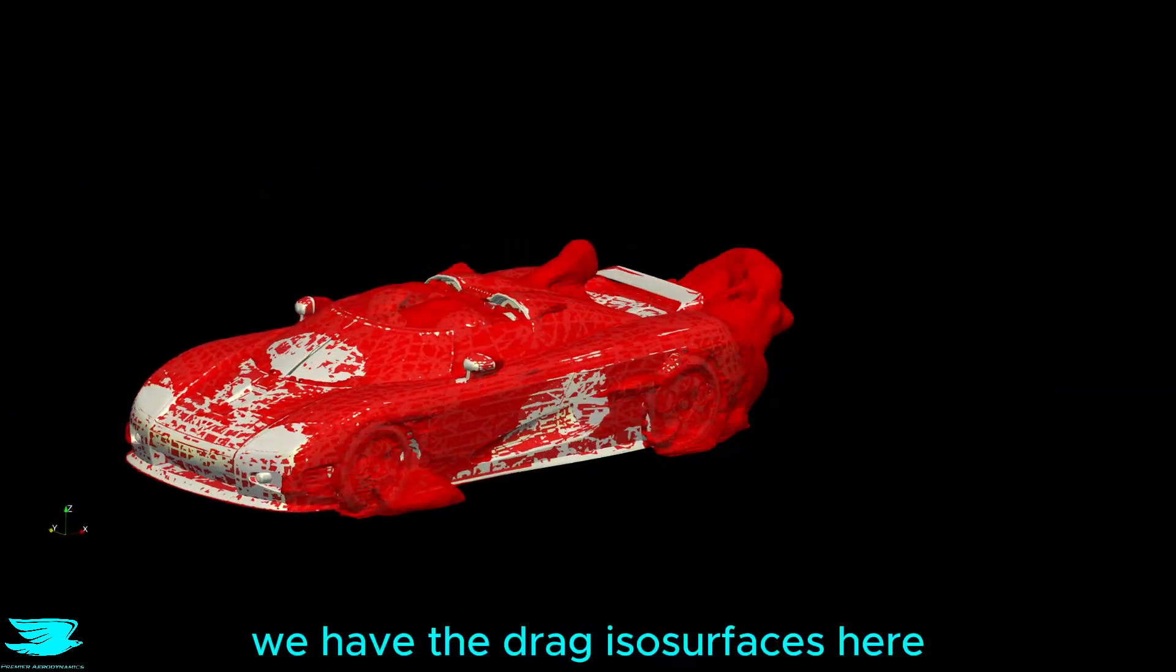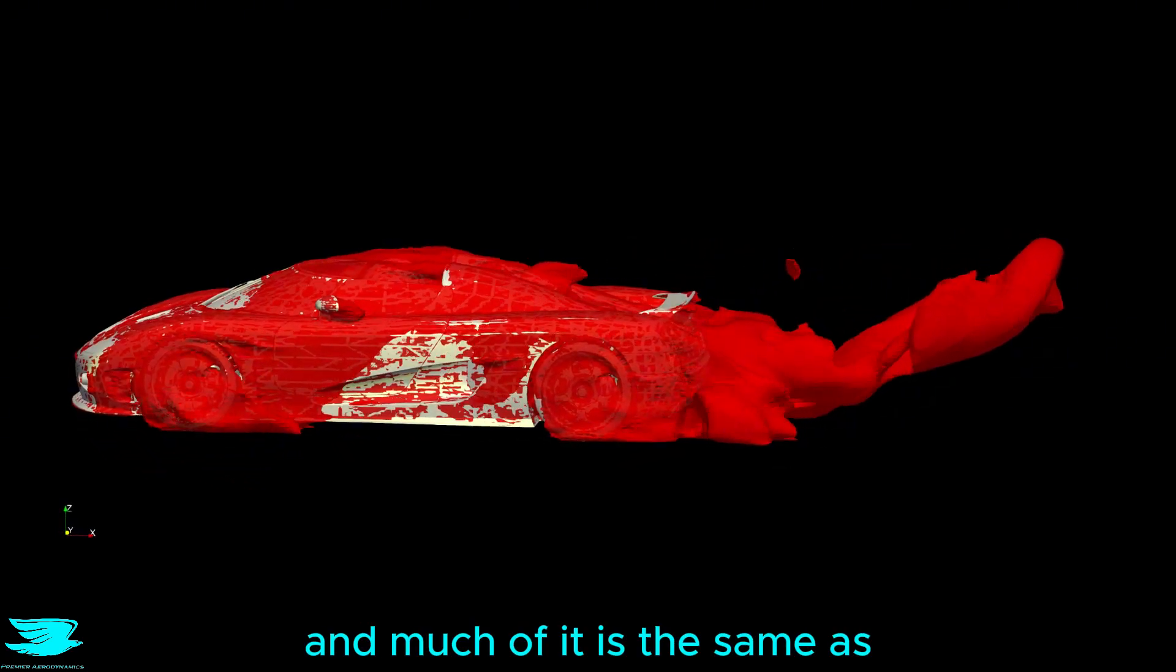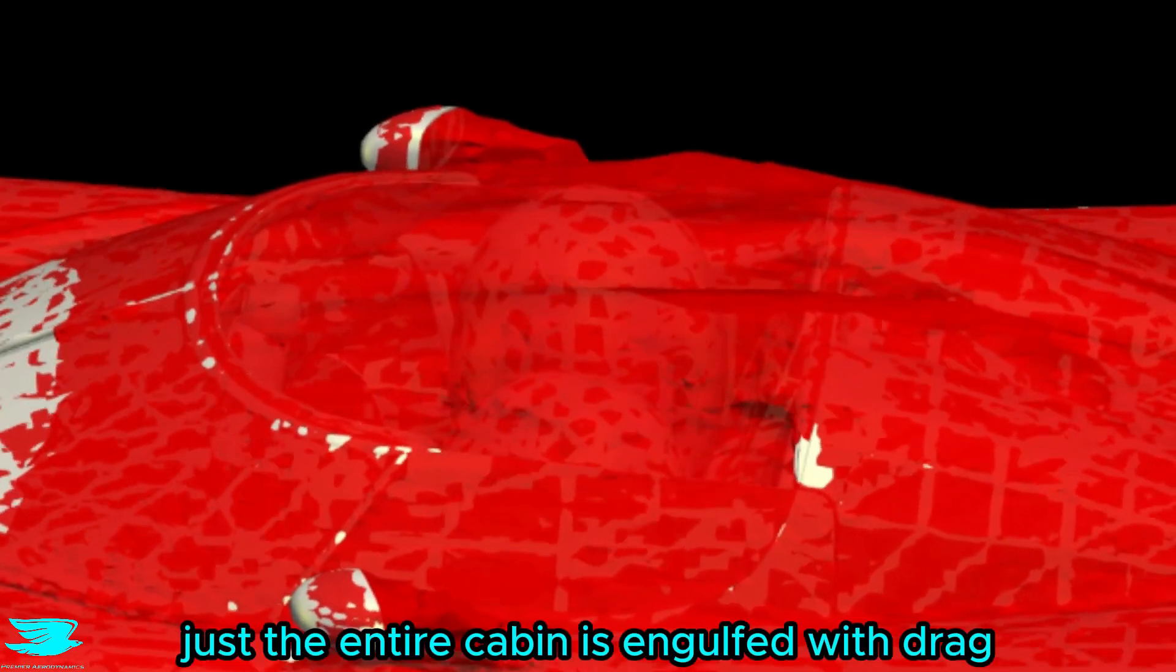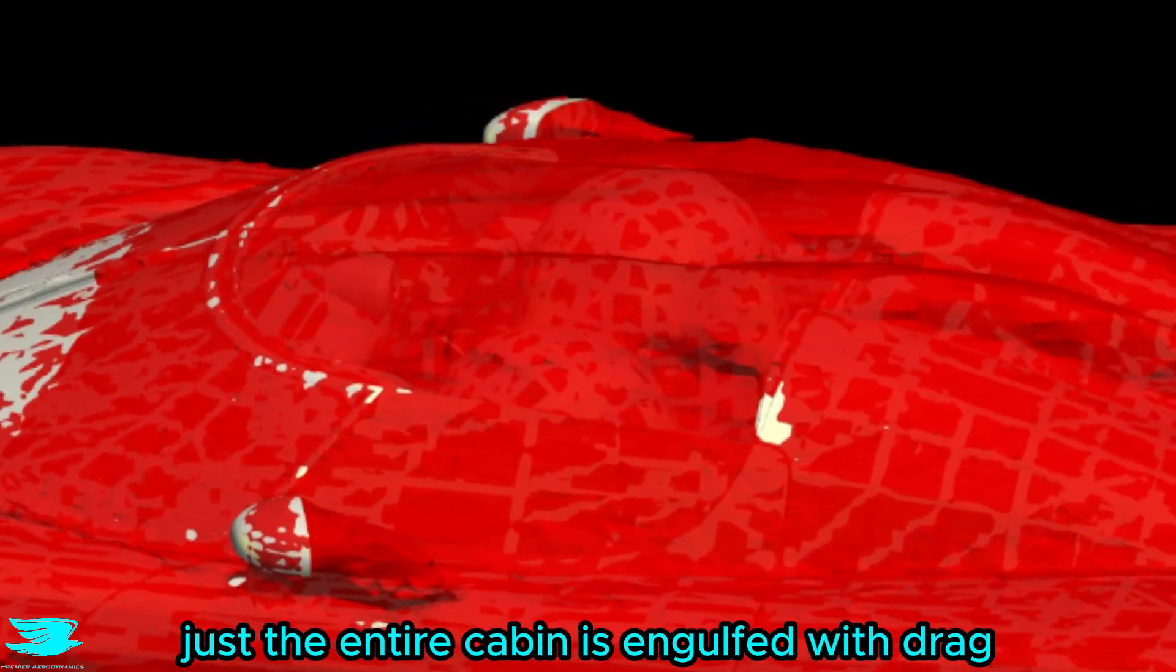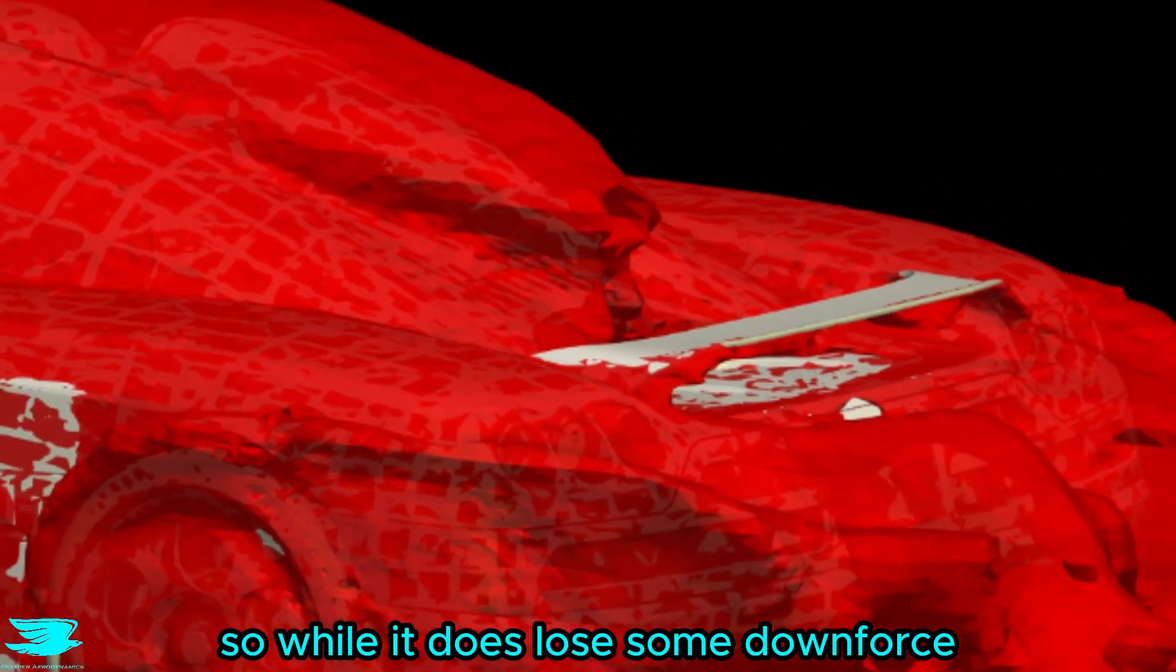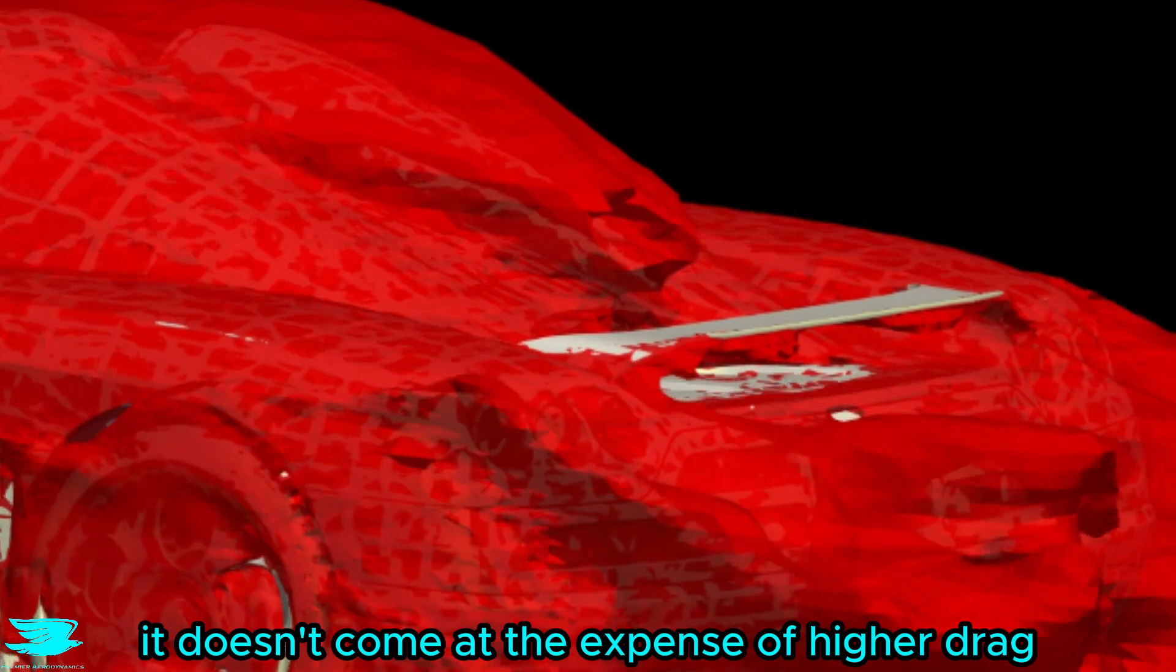And speaking of drag, we have the drag isosurfaces here, and much of it is the same as when the car has a roof but the cabin is definitely different. I mean, just the entire cabin is engulfed with drag. The watermelons are swimming in drag. The wing is pretty good though, so while it does lose some downforce, it doesn't come at the expense of higher drag.